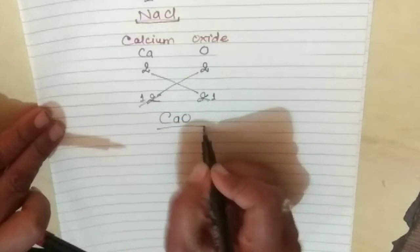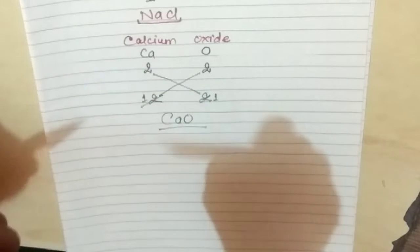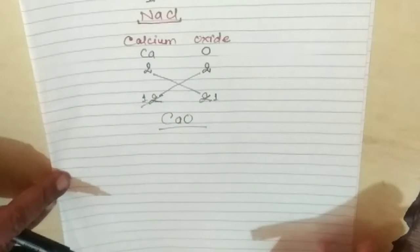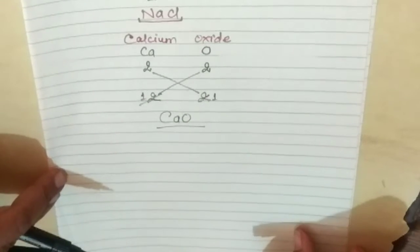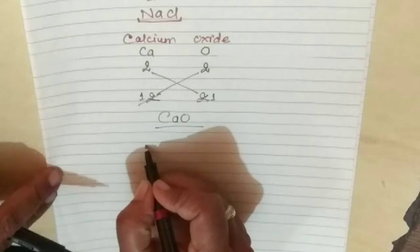CaO is the molecular formula of Calcium Oxide. If the numbers are divisible, we simplify them before writing the formula.